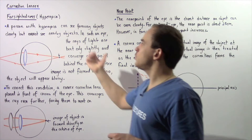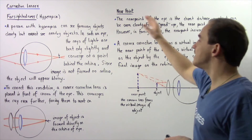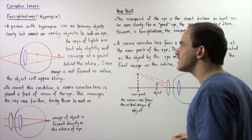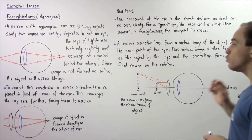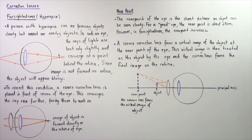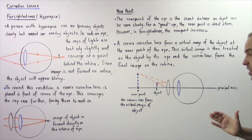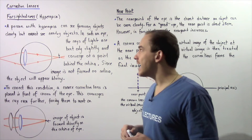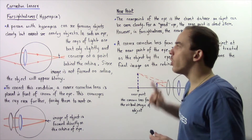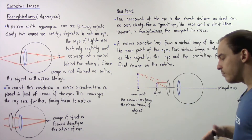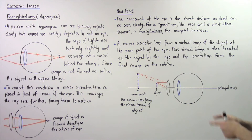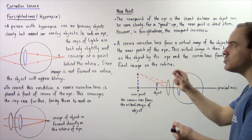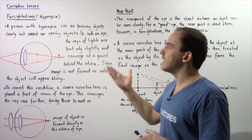What is the relationship between farsightedness and the near point of the eye? The near point is the closest distance at which an object can be seen clearly. For a normal eye, the near point is about 25 centimeters. However, in a person with farsightedness, the near point increases. For example, as a person ages, their near point increases and they can eventually develop farsightedness.